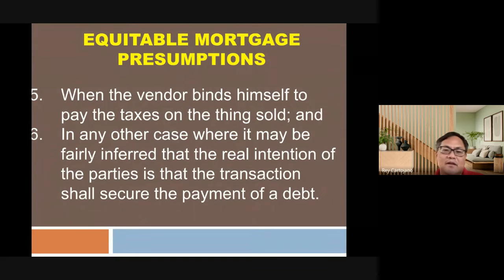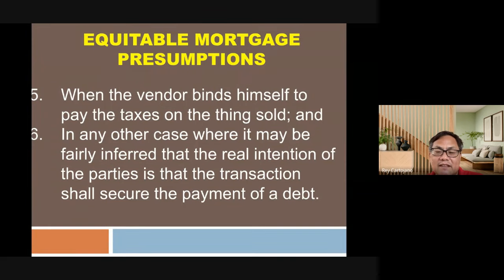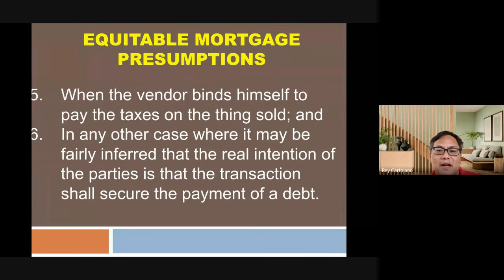Fifth, when the vendor binds himself to pay the taxes on the thing sold — if the seller is still paying the land taxes after the alleged sale, this suggests he is still the real owner. The enumeration is not limited to these five; the law can consider other instances where the transaction will be treated as an equitable mortgage, as long as the purpose was to secure the payment of a debt.